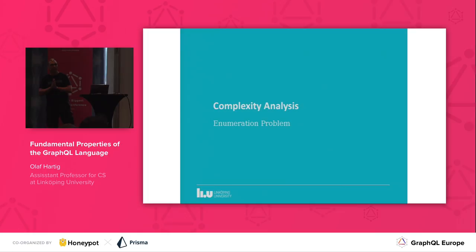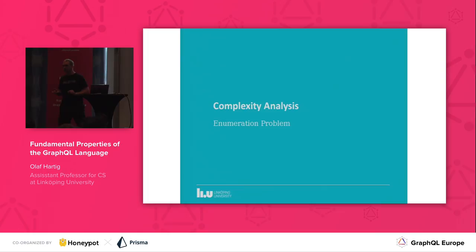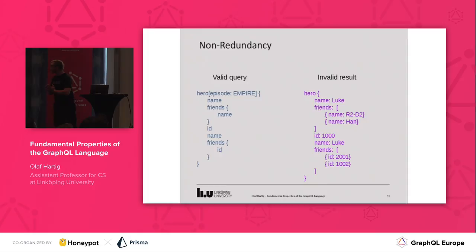The enumeration problem deals with how difficult it is to produce the complete result for a query. In order to study this for GraphQL, we focused on a class of GraphQL queries to make our lives a little bit easier — but this is not a limitation as you will see in a second. This class of queries that we focused on, we call them non-redundant queries in ground-typed normal form. Sounds weird, but let me give you the intuition.